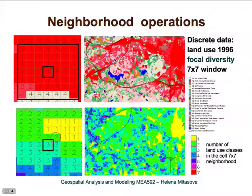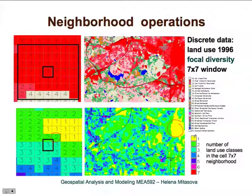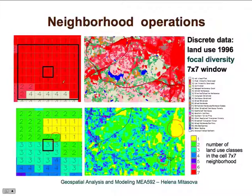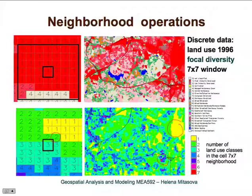You can see that, for example, downtown has very homogeneous land use — it is all high-density developed, so it has only one category. Then there are certain areas where within a 7×7 window we have as many as six or seven different land use categories — high-intensity and low-intensity developed, some agriculture, some forest, different kinds of vegetation. So it is indeed a very diverse location from the point of view of land use.